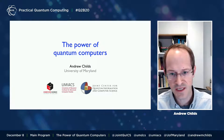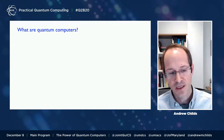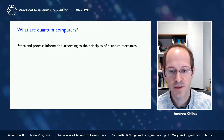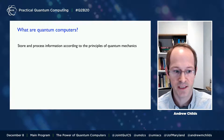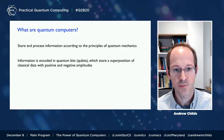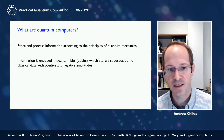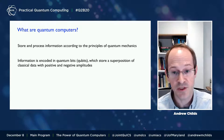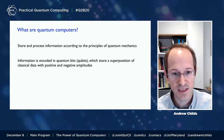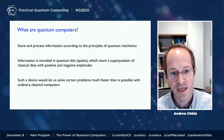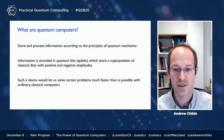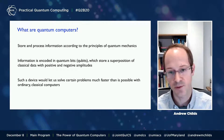What are quantum computers? Quantum computers are devices that can store and process information according to the principles of quantum mechanics. By storing information in quantum mechanical bits, or qubits, which store a superposition of classical data with amplitudes that can be either positive or negative, we can represent and process information in a different way. We believe such a device would allow us to solve certain problems much faster than is possible with ordinary classical computers.